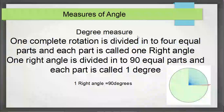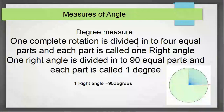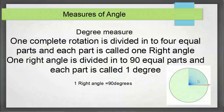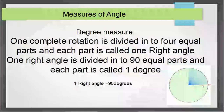The definition of degree is as follows. Consider one complete rotation and divide it into four equal parts — each part is called one right angle. One right angle is further divided into 90 equal parts, and each part is called one degree. Thus one right angle is equal to 90 degrees.